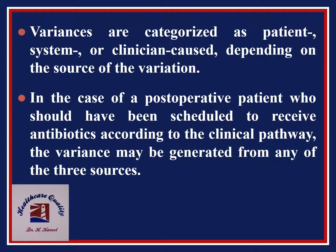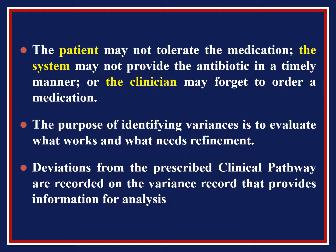Variances are categorized as patient, system, or clinician caused, depending on the source of the variation. In the case of a post-operative patient who should have been scheduled to receive antibiotics according to the clinical pathway, the variance may be generated from any of these three sources: the patient may not tolerate the medication, the system may not provide the antibiotic in a timely manner, or the clinician may forget to order the medication. The purpose of identifying variances is to evaluate what works and what needs refinement. Deviations from the prescribed clinical pathway are recorded on the variance record, which provides information for analysis.